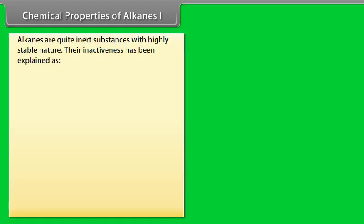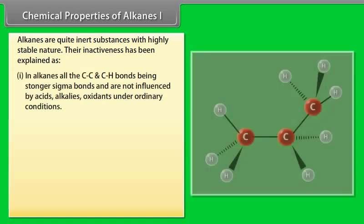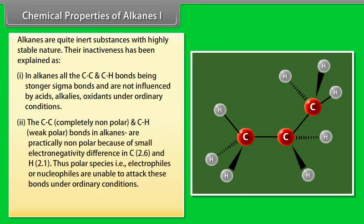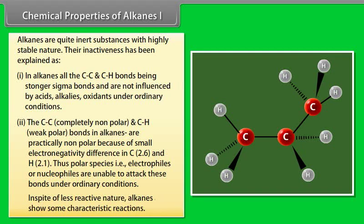Chemical properties of alkanes: Alkanes are quite inert substances with highly stable nature. Their inactiveness has been explained as: Number 1, in alkanes all the carbon-carbon and carbon-hydrogen bonds, being stronger sigma bonds, are not influenced by acids, alkali, or oxidants under ordinary conditions. Number 2, the carbon-carbon completely non-polar and carbon-hydrogen weak polar bonds in alkanes make alkanes particularly non-polar because of small electronegativity difference in C, 2.6, and H, 2.1. Thus, polar species, i.e. electrophiles and nucleophiles, are unable to attack these bonds under ordinary conditions.